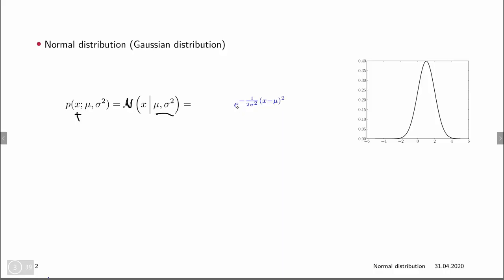The distribution is given by the following formula: e to the power of minus one divided by two sigma squared, times x minus the mean mu, squared. There is an extra term: we multiply the whole thing by one divided by the square root of two pi sigma squared.